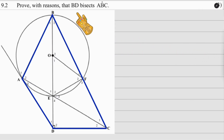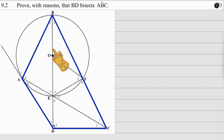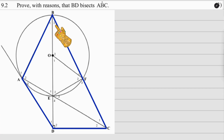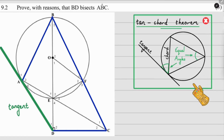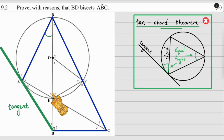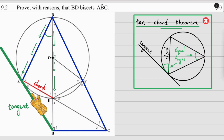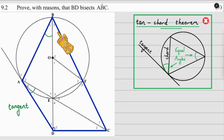In 9.2, we need to prove that BD bisects angle ABC — in other words, prove that B1 equals B2. We'll use the tan-chord theorem. The question told us that DA is a tangent, and we want to tie in angle B1. Following B1 down to its chord takes us to chord AE, so the angle between the tangent and the chord — A3 — will be equal to B1.